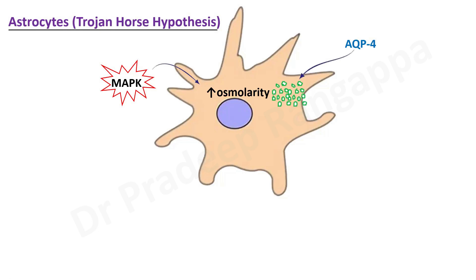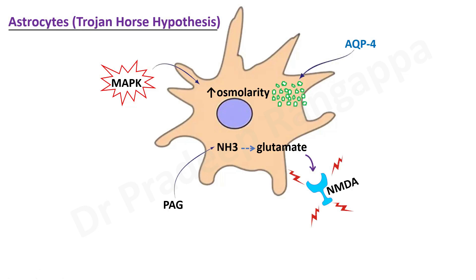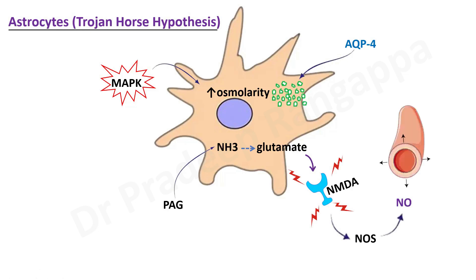Within the astrocytes, ammonia is converted to glutamate, which is incriminated as a toxic substance causing hepatic encephalopathy. The increase in ammonia is caused by phosphate-activated glutaminase (PAG), which increases ammonia levels in astrocytes to supranormal levels. This ammonia gets converted to glutamate, which causes activation of NMDA (N-methyl-D-aspartate) receptors. NMDA receptor activation produces nitric oxide synthase, which is converted to nitric oxide, leading to vasodilation, hyperemia of the brain, and worsening brain edema and encephalopathy.